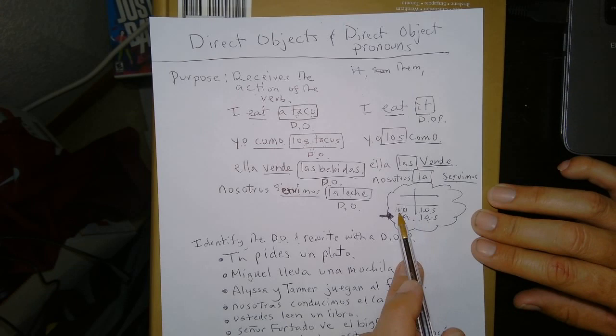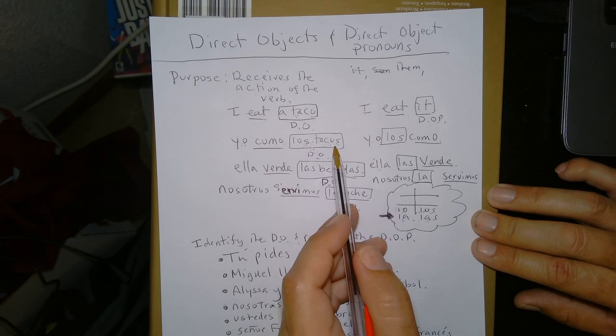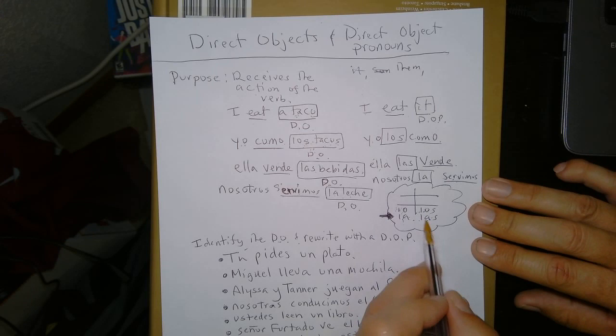We have four because we have to make everything agree in Spanish. So, whatever you're replacing has to agree with this. Because it's los tacos. It's plural. And it's third person.